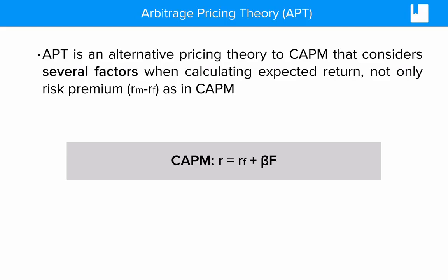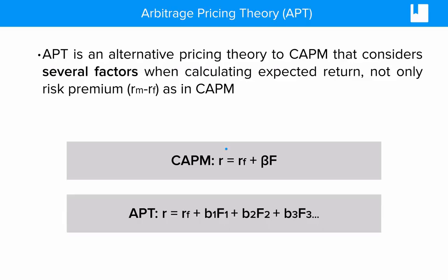In the CAPM model, return is equal to the risk-free rate plus beta, our sensitivity measure, multiplied by a factor. With Arbitrage Pricing Theory, the expected return on an asset is our risk-free rate plus multiple different sensitivities — B1, B2, and B3 — multiplied by several different factors other than just RM minus RF, our market risk premium. So we've extended the set of measures we look at to calculate the expected return.